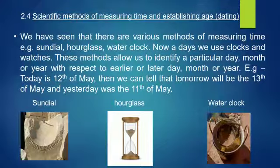Now let's see unit 2.4: scientific methods of measuring time and establishing age, that is dating. We have seen that there are various methods of measuring time. For example, the sand dial, hourglass, and water clock. Nowadays we use clocks and watches, but in those days, clocks and watches were not there.